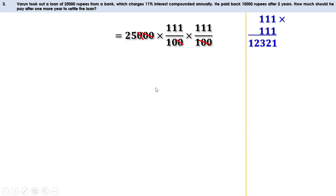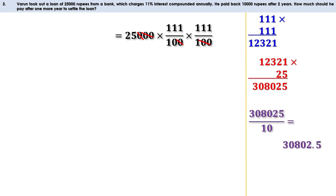That should be multiplied by 25, giving us 3,08,025. Now dividing by 10, we get 30,802.5, meaning 30,802 rupees and 50 paise. Rounding, the amount after 2 years is 30,803 rupees.